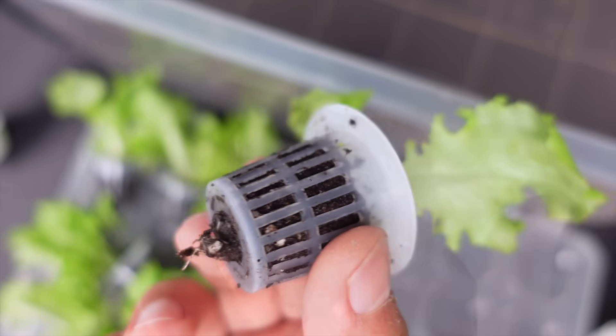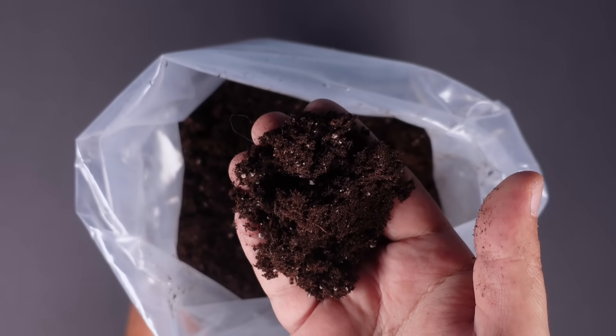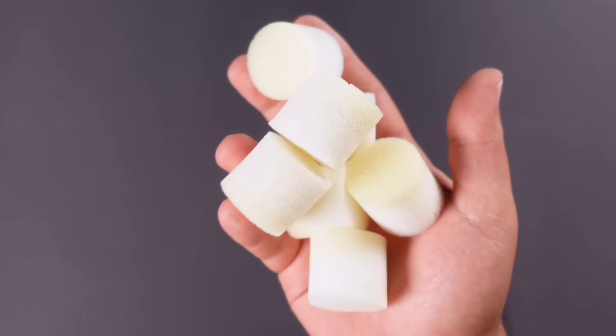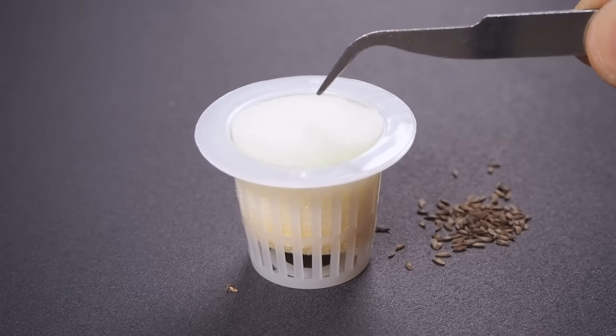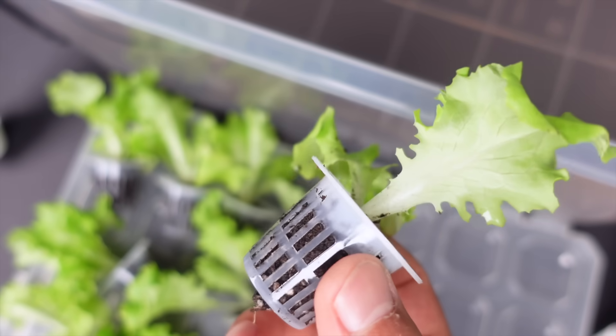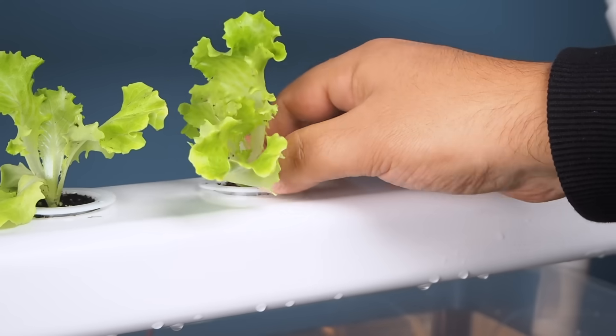In the section on germination, I mentioned the disadvantages of peat soil and suggested using agricultural rock wool or growing sponges for germination. This is because during irrigation some particles from the peat soil get into the water tank, which can clog the pump.